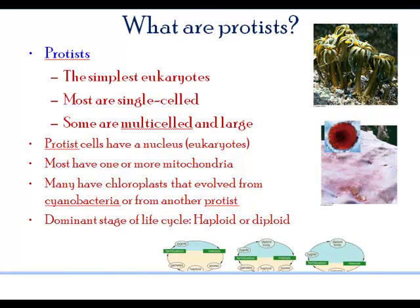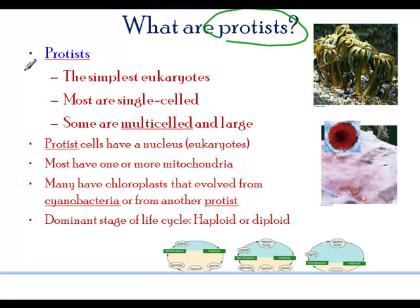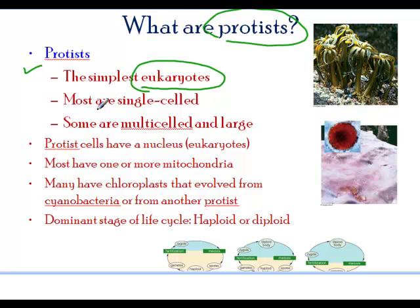In this section we are going to look at another group of organisms called protists. The protists are the first of the eukaryotes that we will look at. Remember, eukaryotes are cells that have organelles such as nucleus, chloroplast, and mitochondria. These are more complex, organelle-containing cells. The simplest eukaryotes that are single-celled are mainly protists, however there are some multicellular ones, though most of them are unicellular.